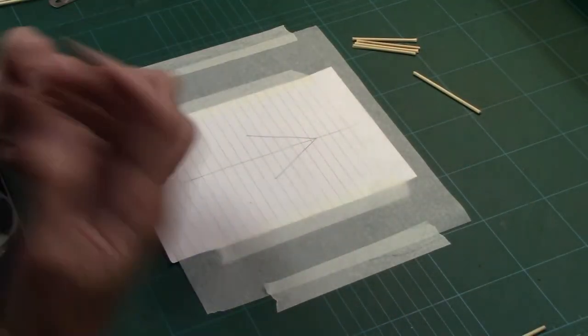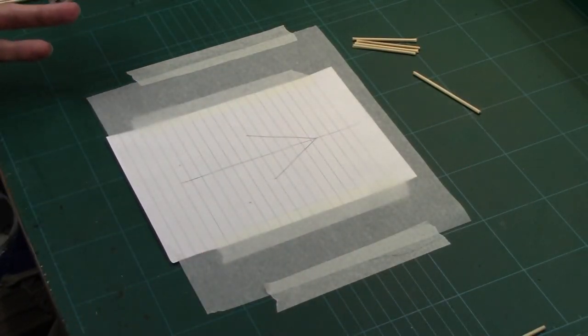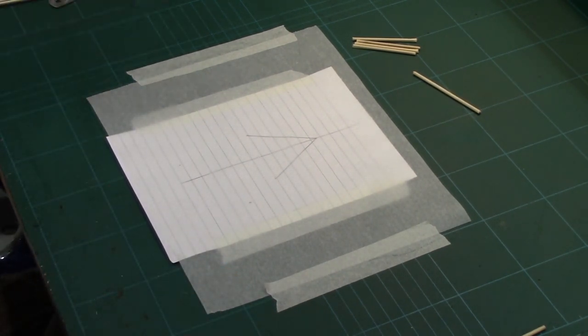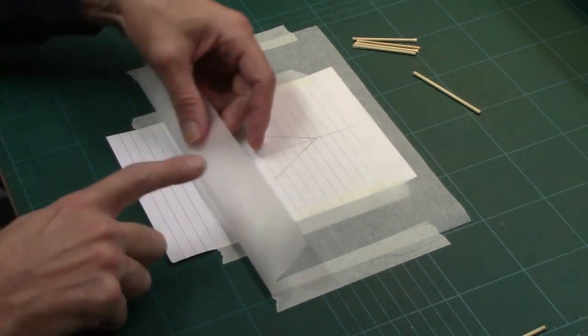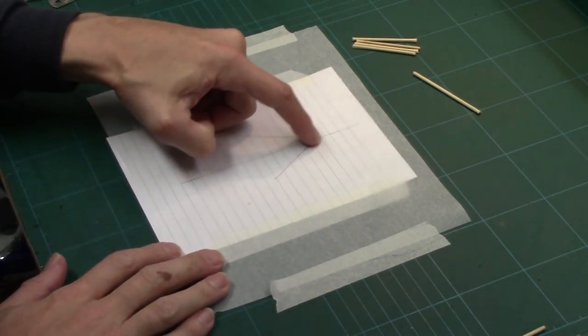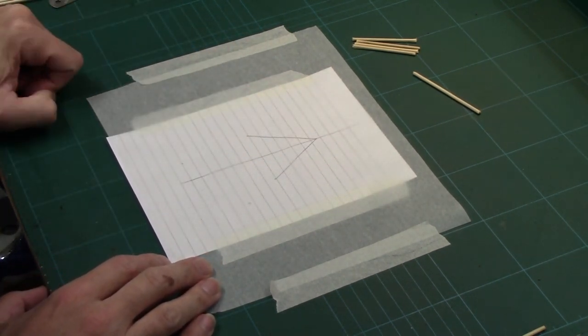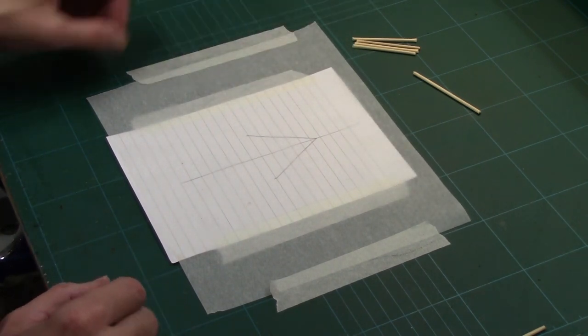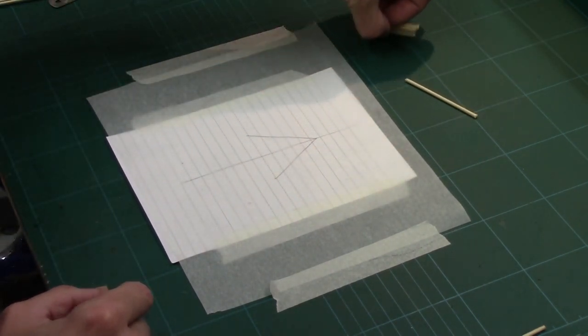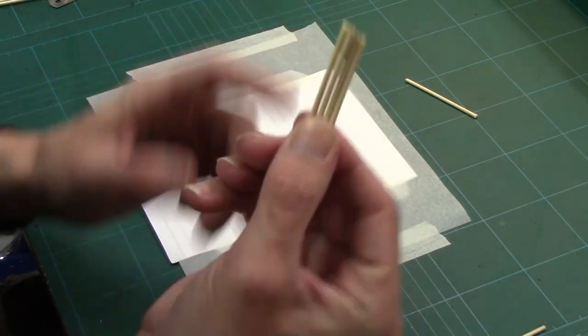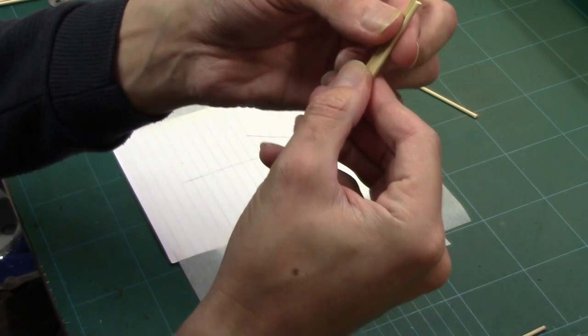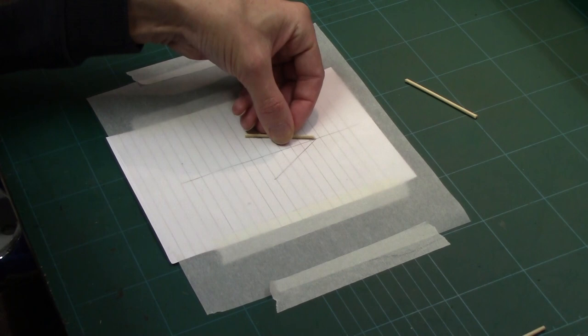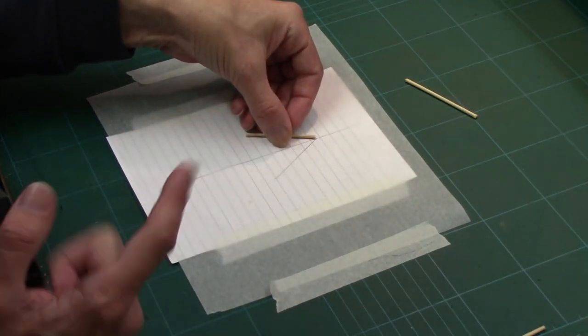For our first substructure we're going to make an A-frame tent. Making an A-frame tent is pretty much exactly the same as making a proper tent, it's just smaller. What I've got here is a bit of paper, and on the paper I've drawn my angles that I want my tent to be. Then over the top, I have taped greaseproof paper, and then what I've done is I've pre-cut my tent bars out of barbecue skewers. I'm going to get two of these and I'm going to tape them down.